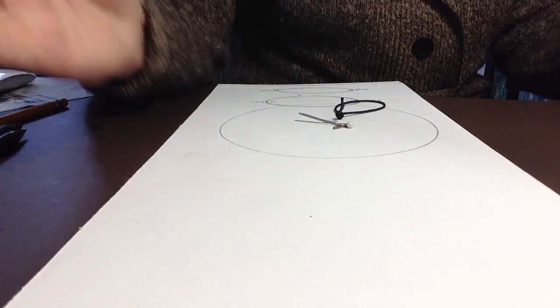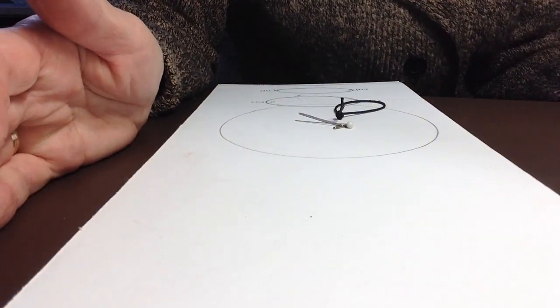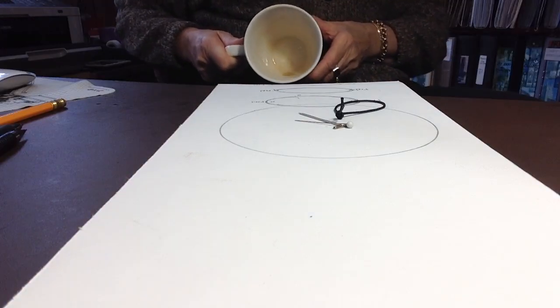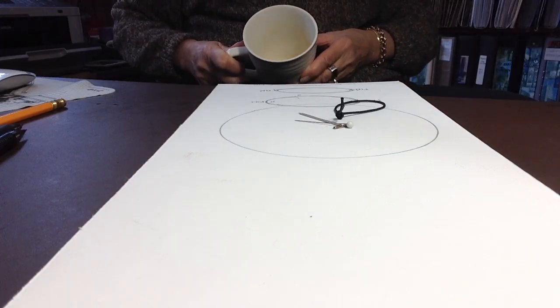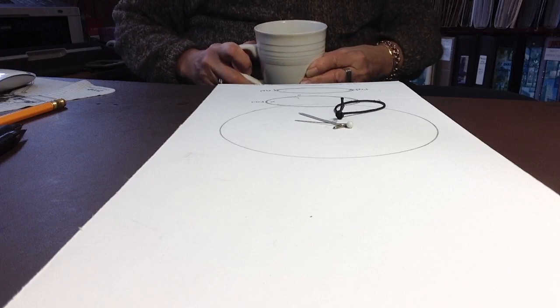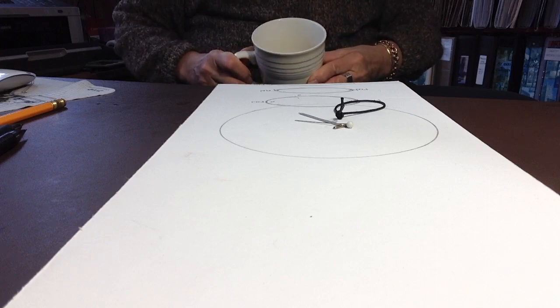When you take a cup and you look at it straight down, you have a perfect circle. But as you get further above it, you can see the angle of the cup changes. And that change is called an ellipse.